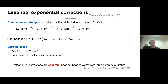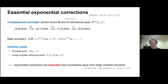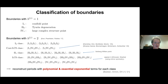The interesting thing is that exponential corrections are essential near every boundary apart from large complex structure. While your intuition from large complex structure might be that you only need the polynomial part of the Kähler potential, this does not persist at other boundaries. This fits nicely with two recent works that related these exponential corrections to a higher-supersymmetric origin, just at the large complex structure point.